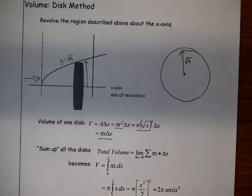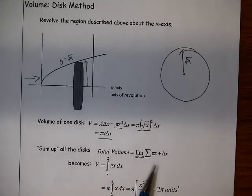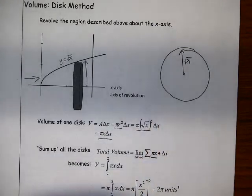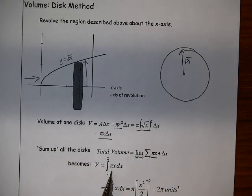Just like we did last time with the known cross-sections, and just like we do with the Riemann sums when we find area in chapter 4, we're going to take a summation of all those disks, apply a limit as delta x approaches 0, and we get a definite integral of pi x dx. And we're integrating from 0 to 2.